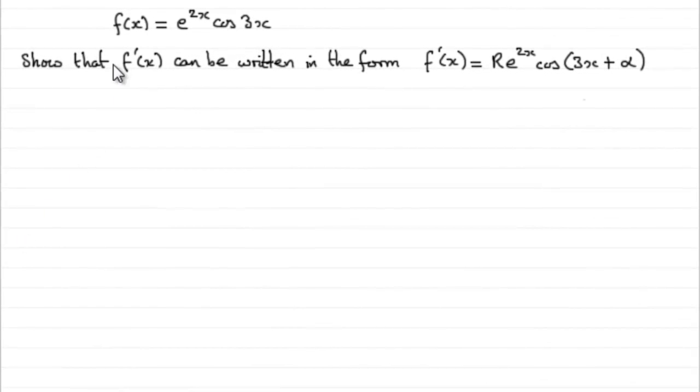Now for this next part we're given that f of x equals e to the power 2x multiplied by cos 3x.